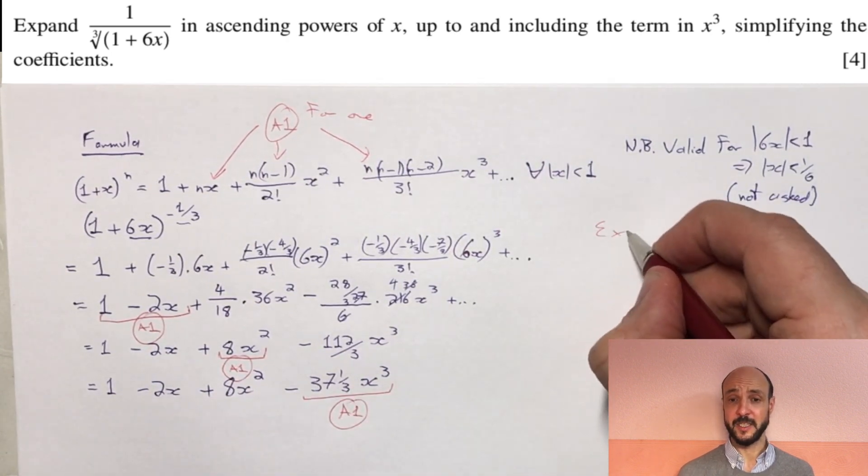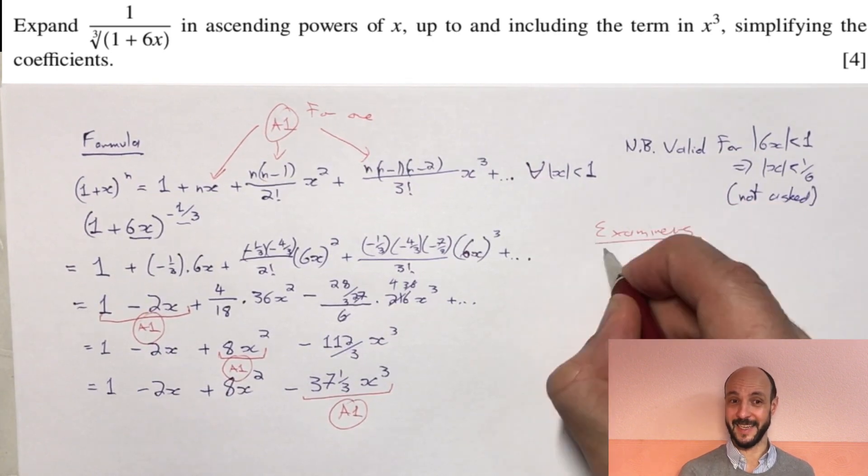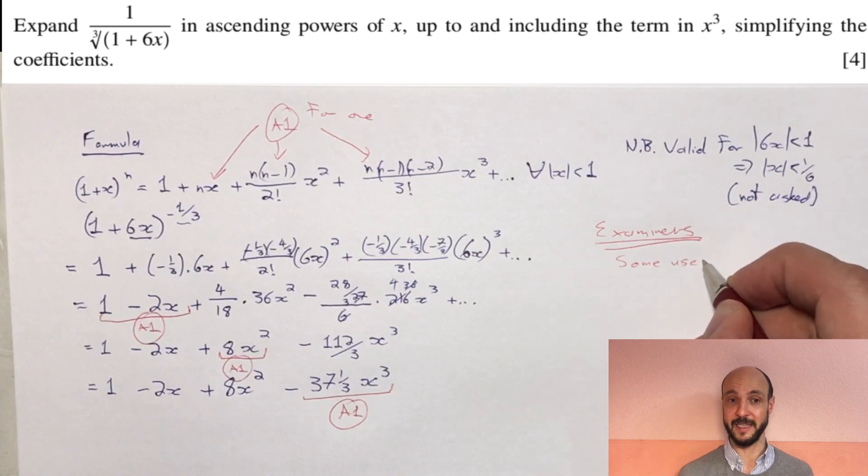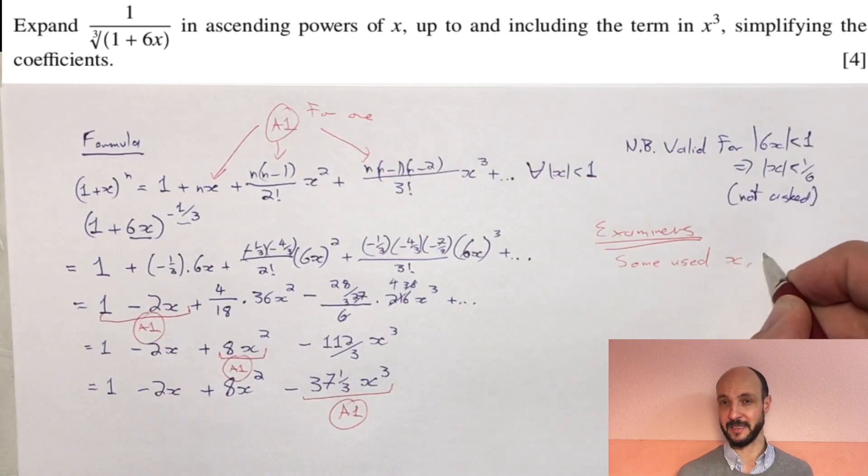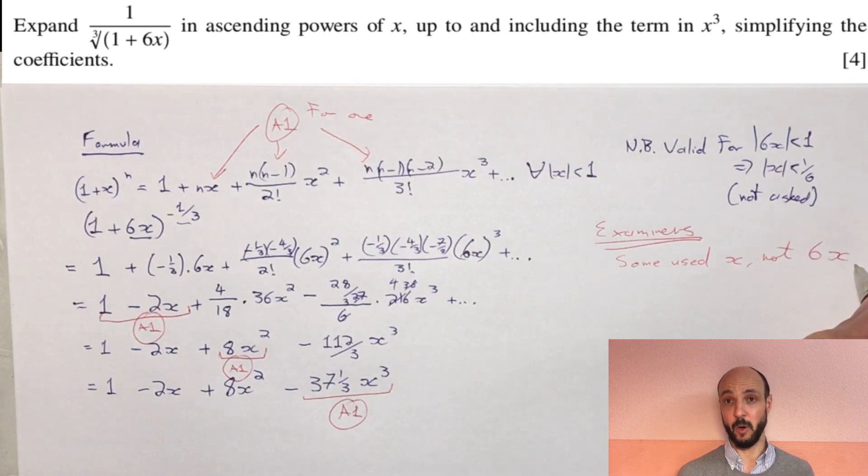Examiners report, generally it was done very well. Some people omitted the coefficient 6, so they took just x instead of taking 6x in the formula as the x. It can be confusing sometimes because we see x in our formula and there's x in the thing itself. If you want to, you can think of the formula with a different variable like y to help avoid that confusion.